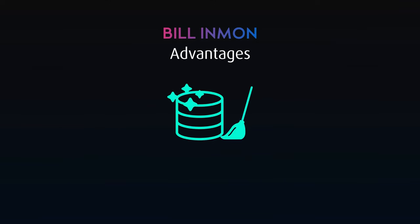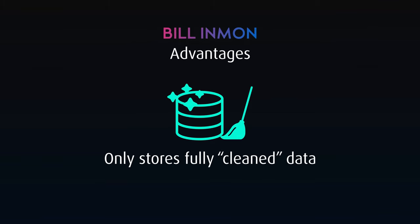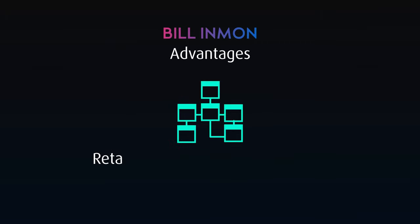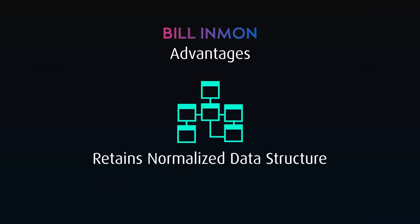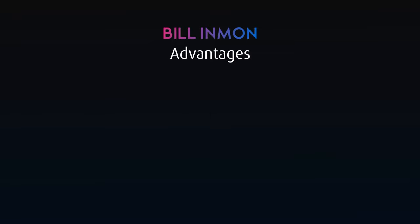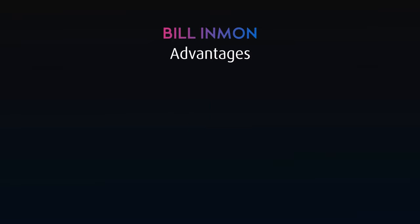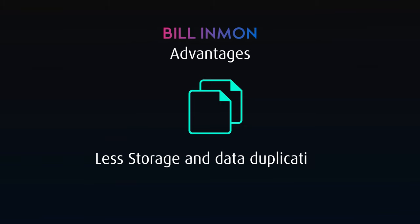So what are the advantages to Inmon's approach? Conforming all data sources to a single definition agreed upon prior to the creation makes the Enterprise Data Warehouse an effective single source of truth that can be trusted by all users. It can be easier to model, as the sources are usually normalized and it is kept normalized in the data warehouse, so remodeling the data is not necessary. It can support any analysis since it contains all the organizational data. There is low redundancy of data since it is all stored and normalized, so less storage is needed and the risk of conflicting values should be minimal.